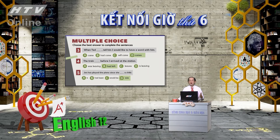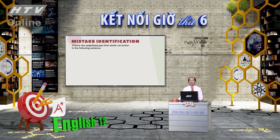Nếu những câu này xuất hiện trong bài kiểm tra thì chúng ta sẽ làm rất dễ dàng. Chúng ta sang phần bài tập tiếp theo: Mistake Identification - nhận diện lỗi sai. Đây là dạng bài cũng rất phổ biến trong các kỳ thi.